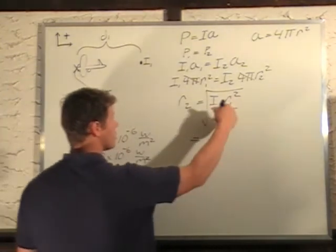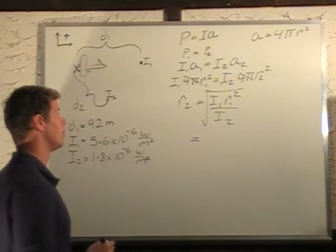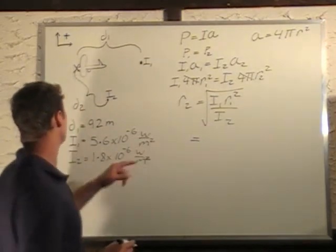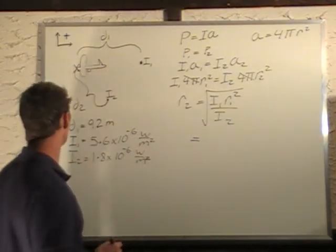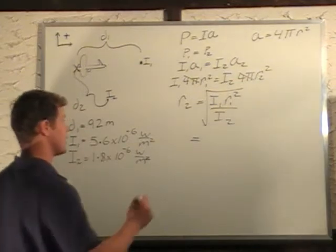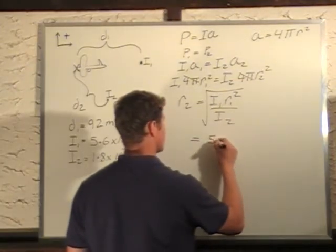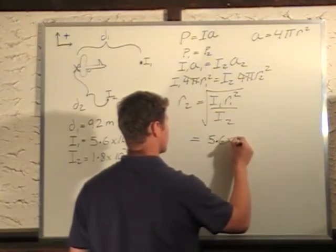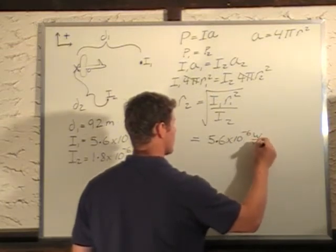All we have to do now is plug in our numbers for this. We know the intensity of the first one is 5.6 times 10 to the minus 6 watts per square meter.